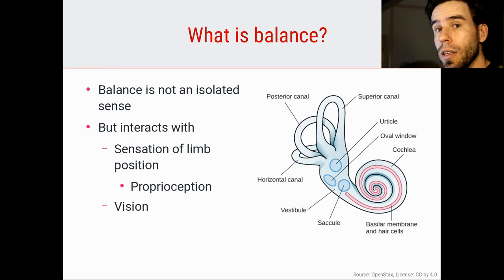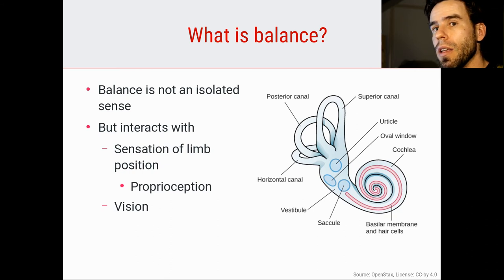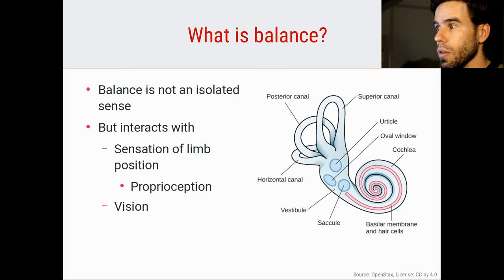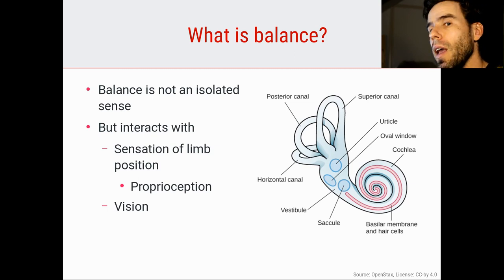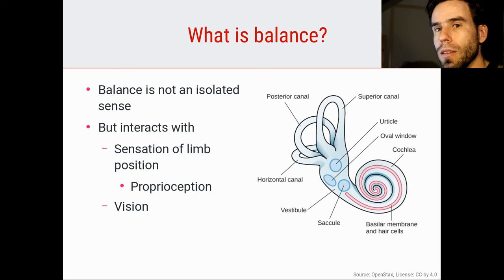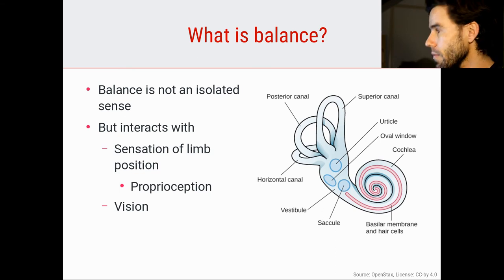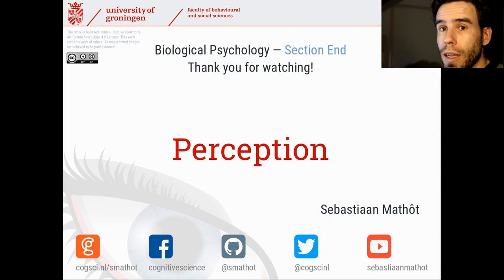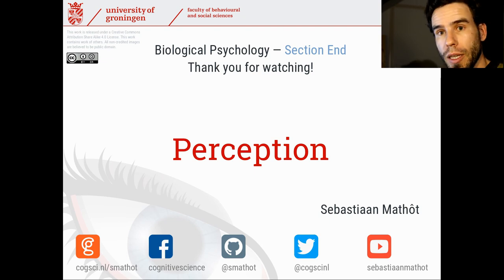In general, in the case of balance there is a lot of interaction with other senses — proprioception, our sense of limb position, and vision. If there is somehow a mismatch between these different interacting senses, that tends to be quite disagreeable. With that, we've arrived at the end of this section on perception. Thank you very much for watching.